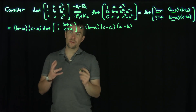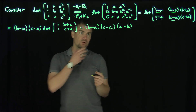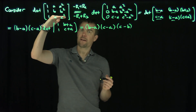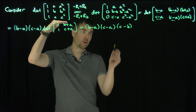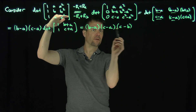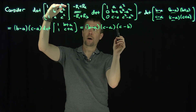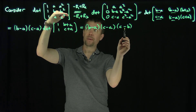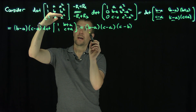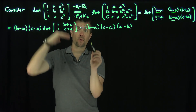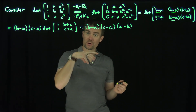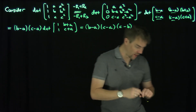We can notice from this calculation that the variable in the bottom row, c, is subtracted from both a and b, which are in rows above it, and b is subtracted from a, which is a row above it. So we're going to conjecture that this pattern holds in general.